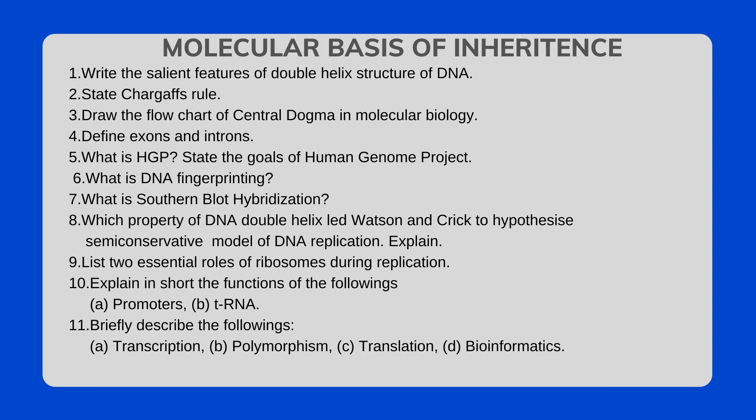Which property of the DNA double helix led Watson and Crick to hypothesize the semi-conservative model of DNA replication? Explain. List the two essential roles of ribosomes during translation. Explain in short the function of the following: promoters and tRNA. Briefly describe transcription, polymorphism, translation, and bioinformatics.